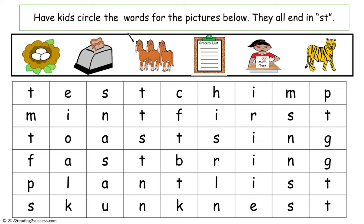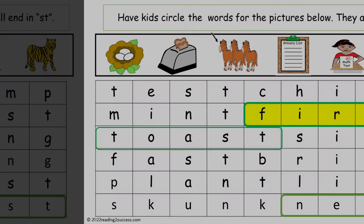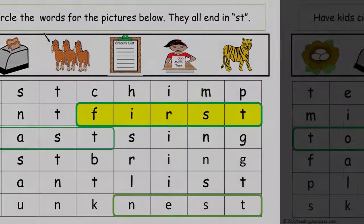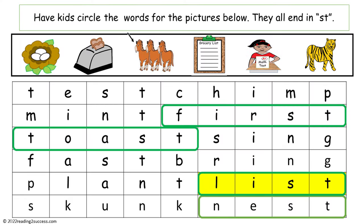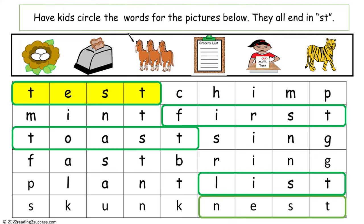Now have kids circle the words for the pictures below — they all end in ST: nest (N-E-S-T), toast (T-O-A-S-T), first (F-I-R-S-T), list (L-I-S-T), test (T-E-S-T), and fast (F-A-S-T).